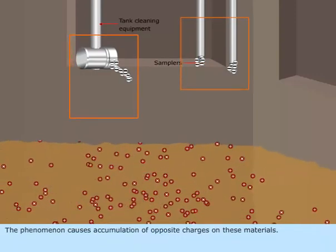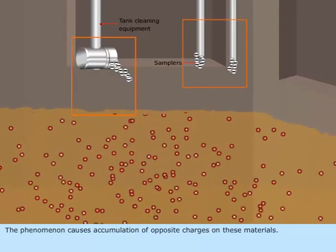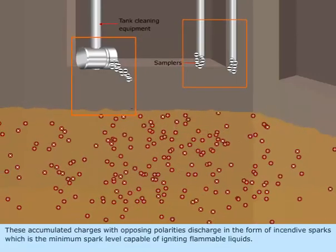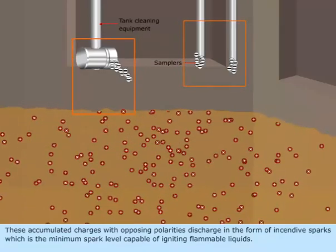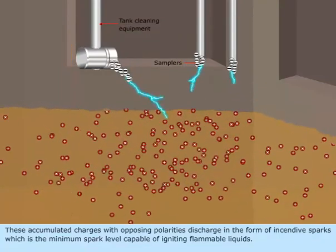The phenomenon causes accumulation of opposite charges on these materials. These accumulated charges with opposing polarities discharge in the form of incendive sparks, which is the minimum spark level capable of igniting flammable liquids.